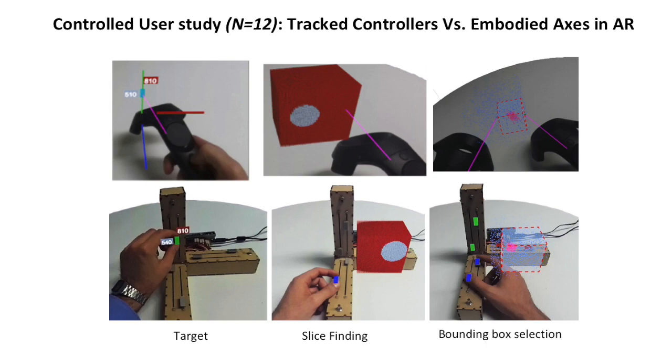With the tracked controllers, participants manipulated the targets and the volume directly with the motion controller. In the Embodied Axis condition, they had to move each slider knob.